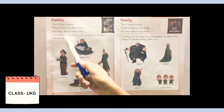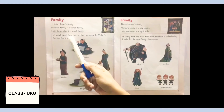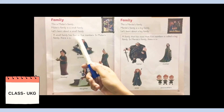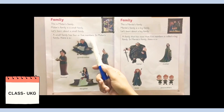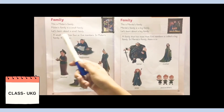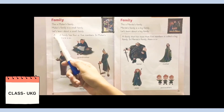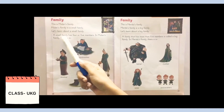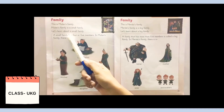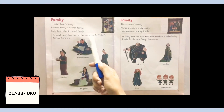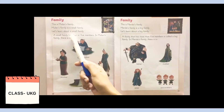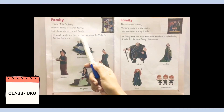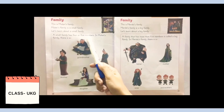A small family has four or five members. Small means छोटा. जो छोटी family होती है, जो छोटा परिवार होता है, उसमें कितने members रहते हैं? Four or five.